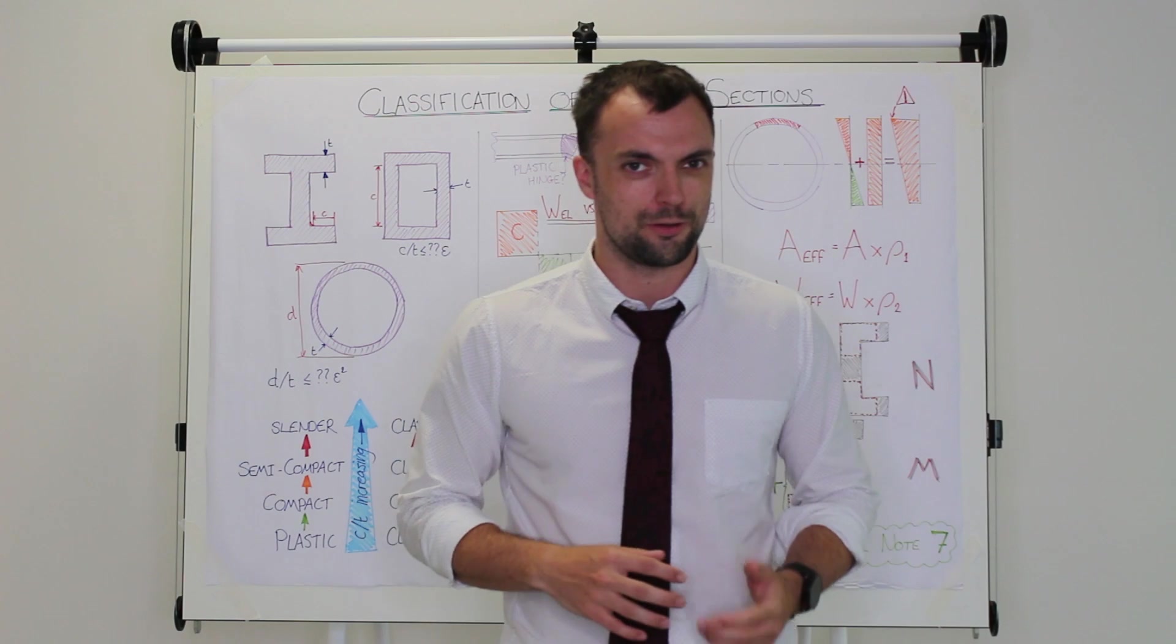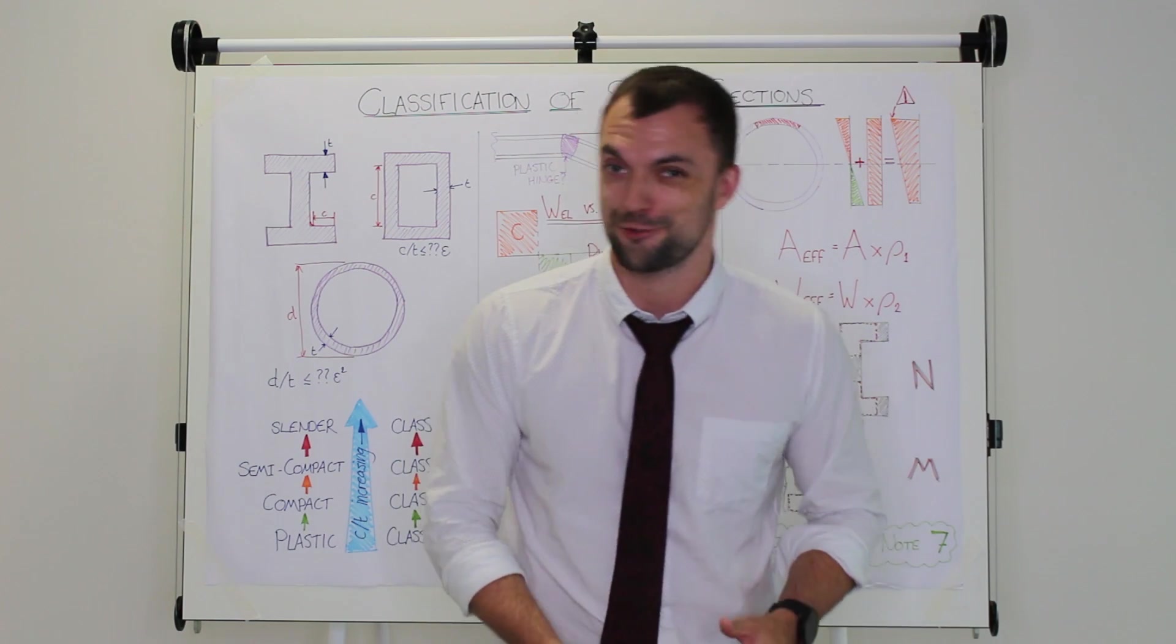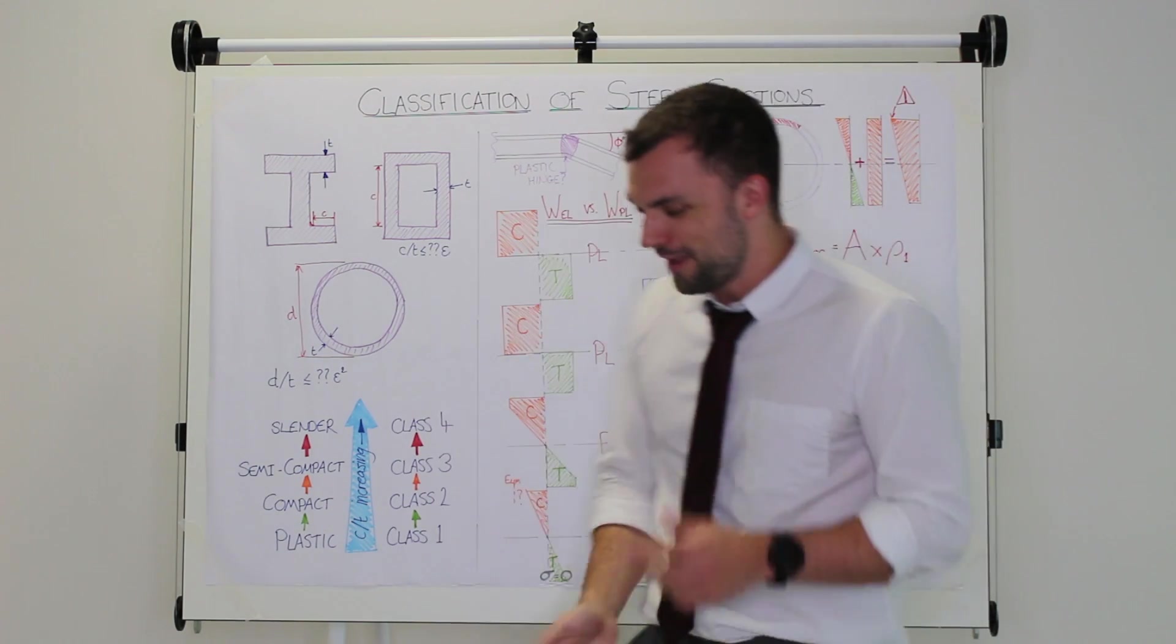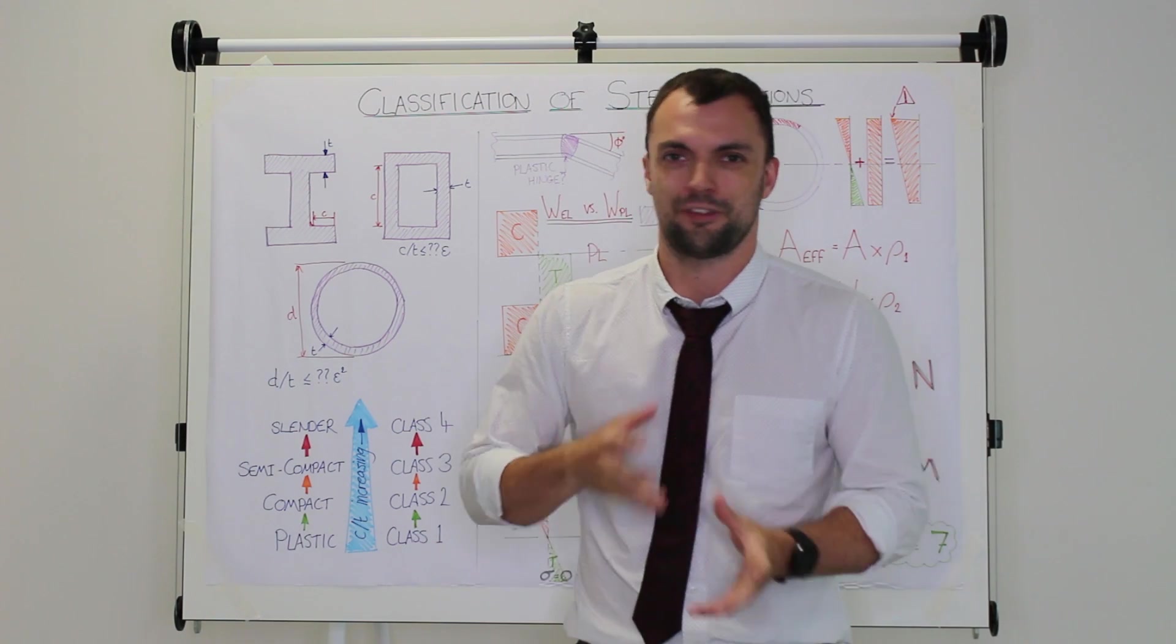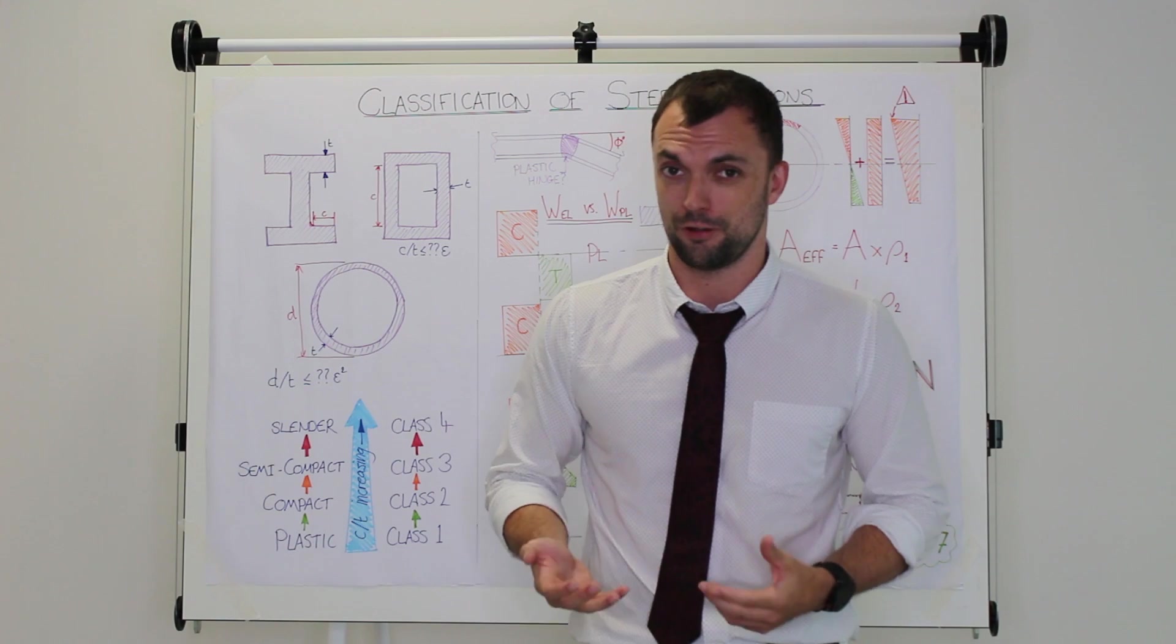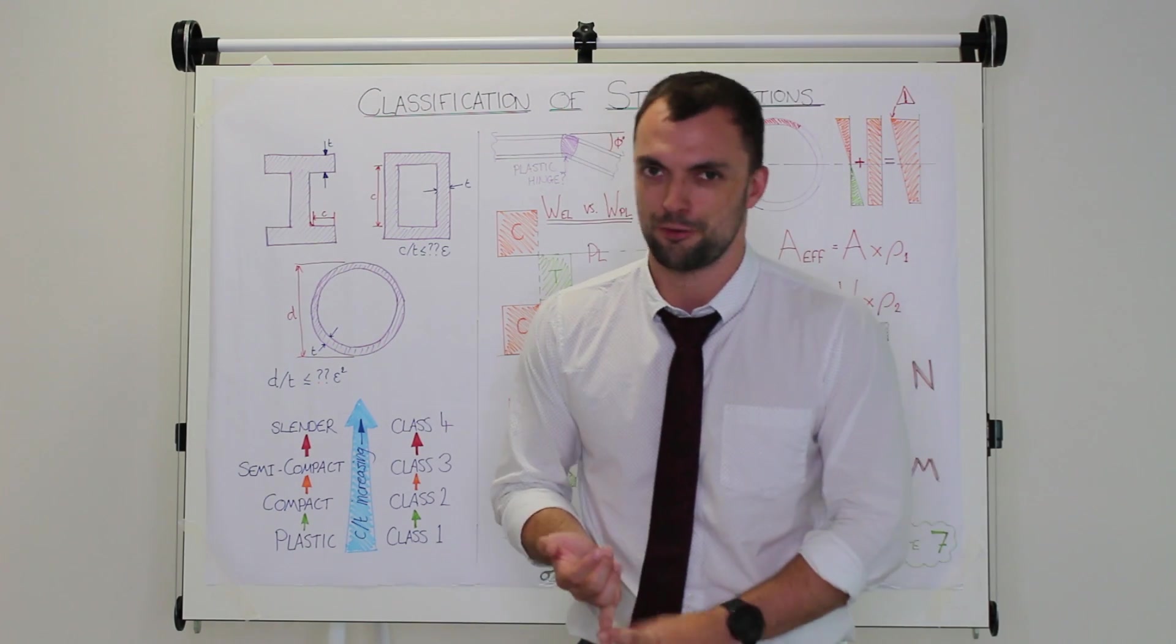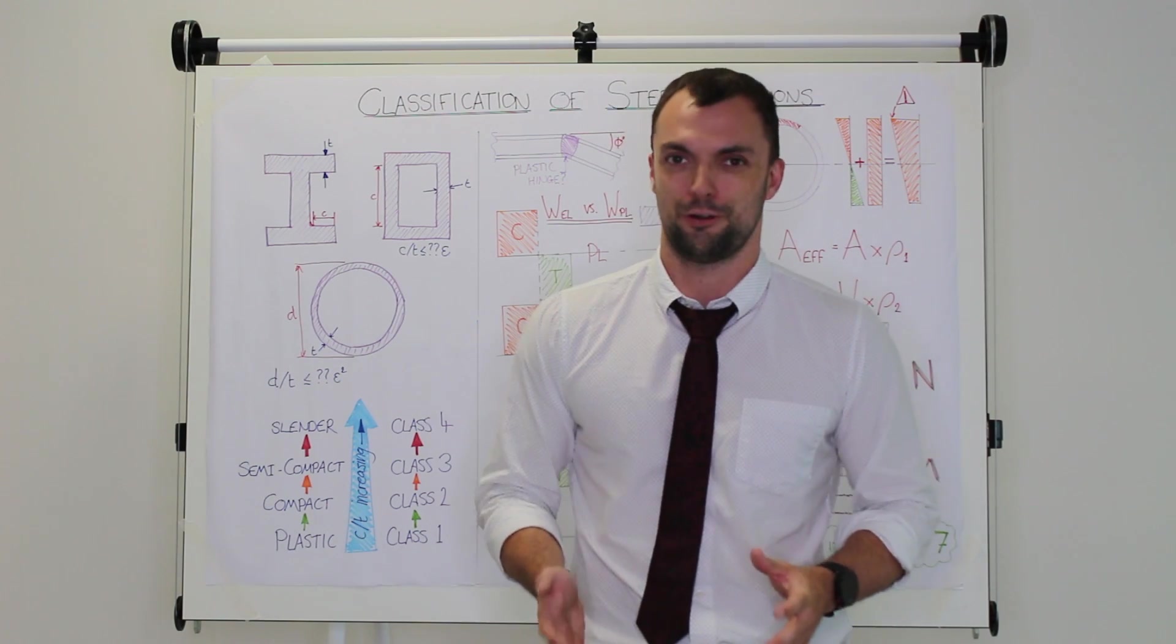Now what determines whether you consider a beam to be plastic or elastic? Well, that's its classification, and today we'll be looking at the classification of steel sections. This only applies to structural steel. Stainless steel and aluminum have different material properties, so the criteria involved are slightly different there. So this applies to structural steel grades S235, S355 and so on, the kind that are covered in part one of Eurocode 3.